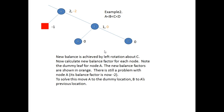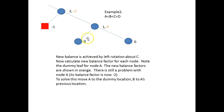We've got a new balance arrangement, but there's still a dummy node over here, so we need to recalculate the heights. B has a height of zero, D has a height of zero, C has a height of one, and A will have a height of two. The balance factor: zero minus zero equals zero; minus one minus one equals minus two — so we're still unbalanced up here.